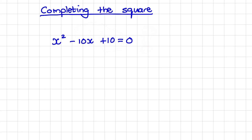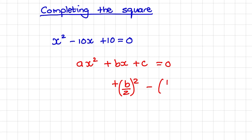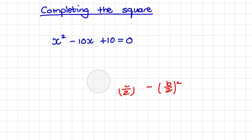Before I show you that method, let us quickly look at a basic quadratic equation. Here we have ax squared plus bx plus c. And when we complete the square, we are going to focus on the coefficient of x. What we would do is add half of b squared and subtract half of b squared in order to create a trinomial that we can factorize. Let me show you how that looks practically in our example.